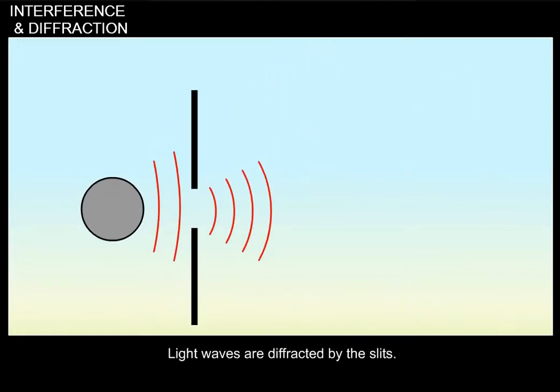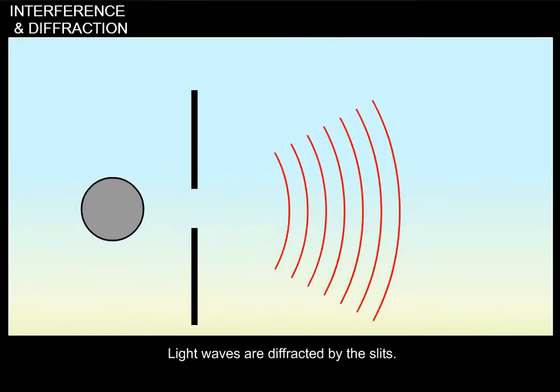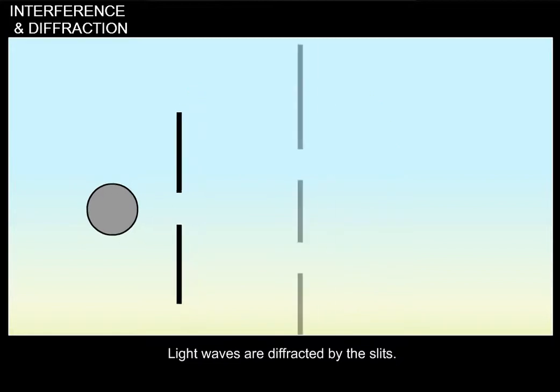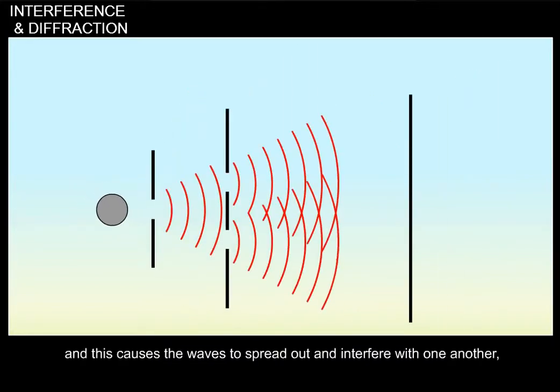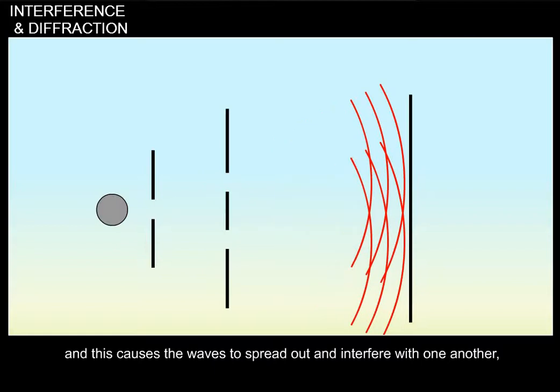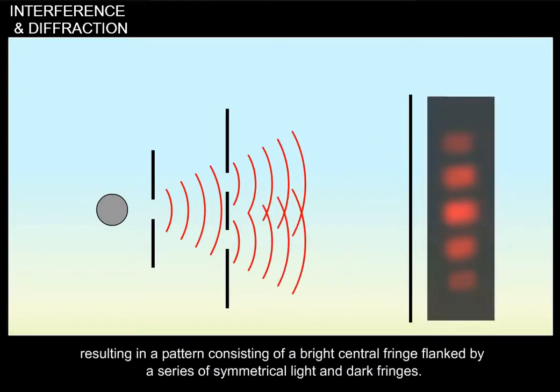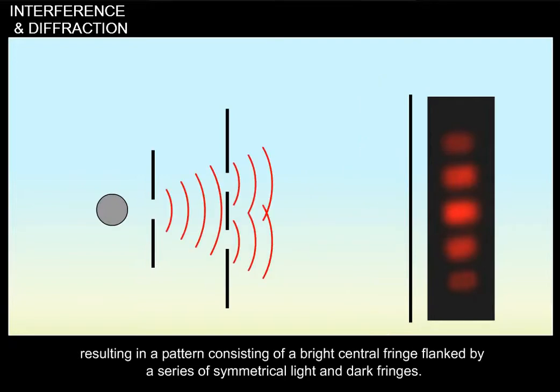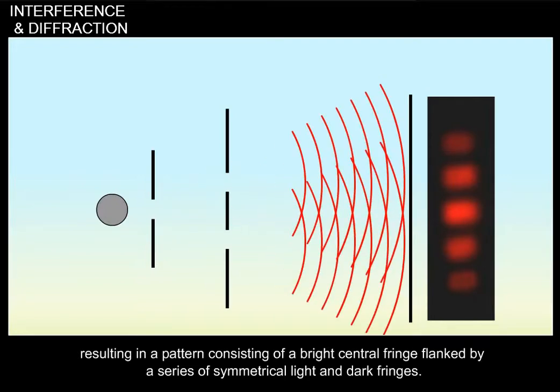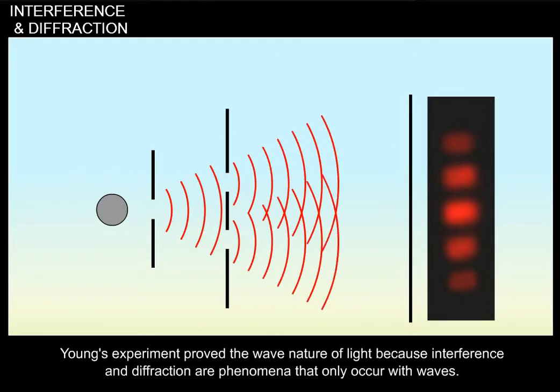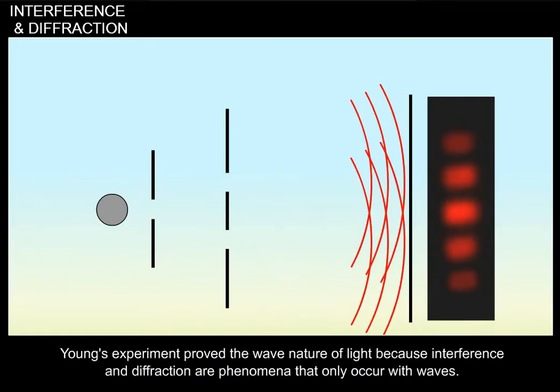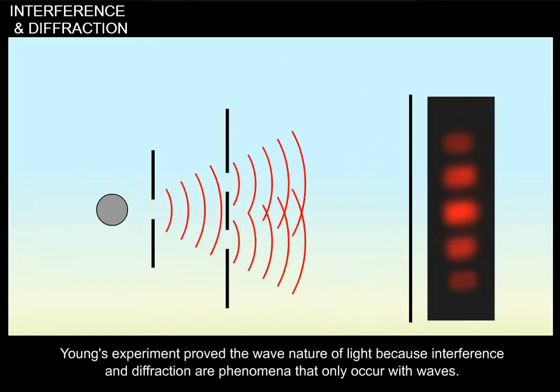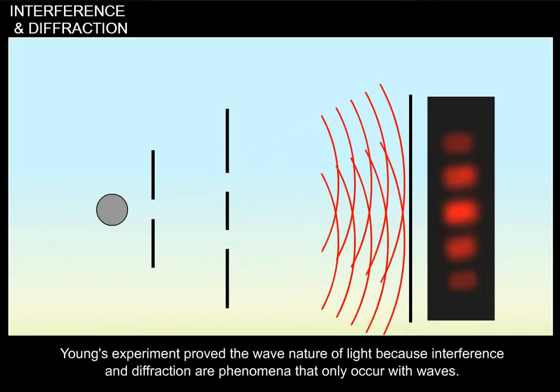Light waves are diffracted by the slits, and this causes the waves to spread out and interfere with one another, resulting in a pattern consisting of a bright central fringe flanked by a series of symmetrical light and dark fringes. Young's experiment proved the wave nature of light because interference and diffraction are phenomena that only occur with waves.